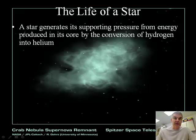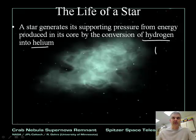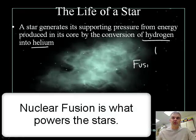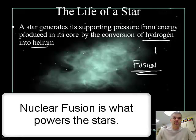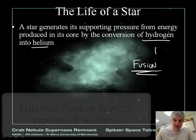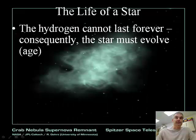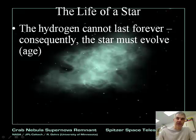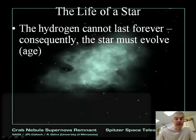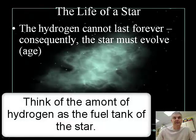The star generates its supporting pressure from energy produced in its core by the conversion of hydrogen into helium — that's called nuclear fusion. That's the energy source of all stars. However, the hydrogen cannot last forever; consequently, the star must change, age, or evolve.